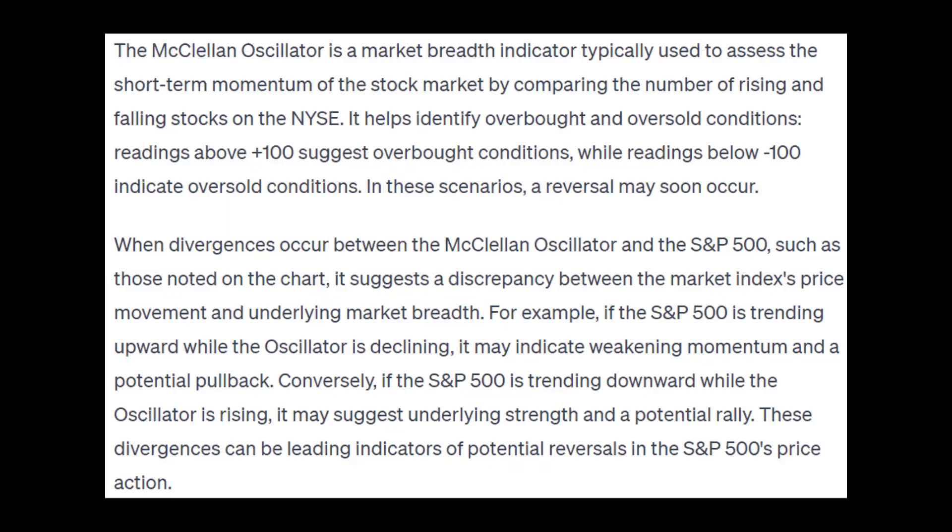When divergences occur between the McClellan Oscillator and the S&P 500, it suggests a discrepancy between the market index's price movement and underlying market breadth. If the S&P 500 is trending upward while the oscillator is declining, it may indicate weakening momentum and a potential pullback. Conversely, if the S&P 500 is trending downward while the oscillator is rising, it may suggest underlying strength and a potential rally. These divergences can be leading indicators of potential reversals in the S&P 500 price action.